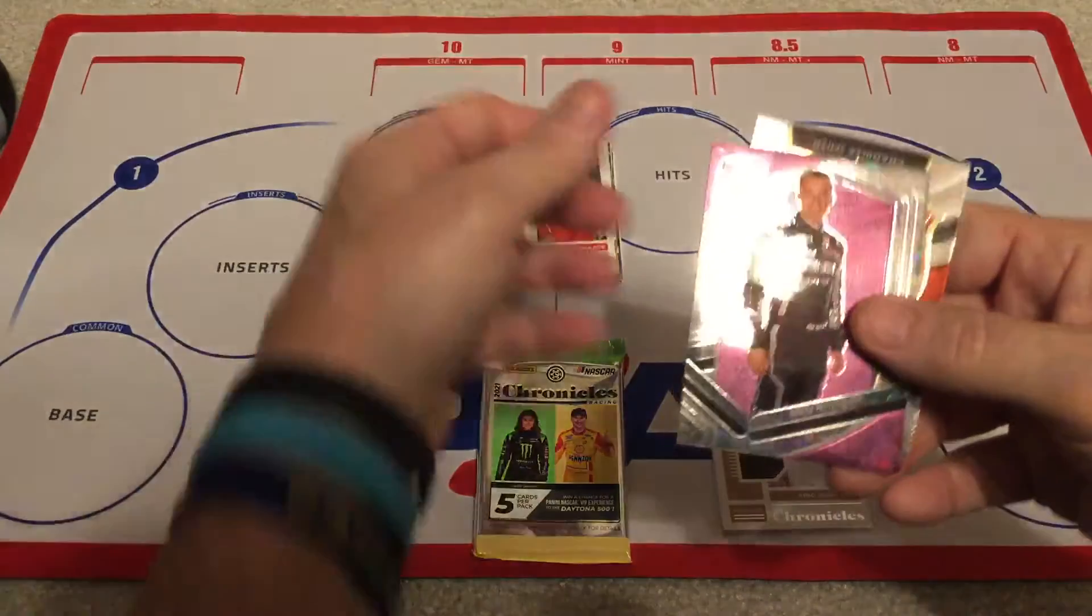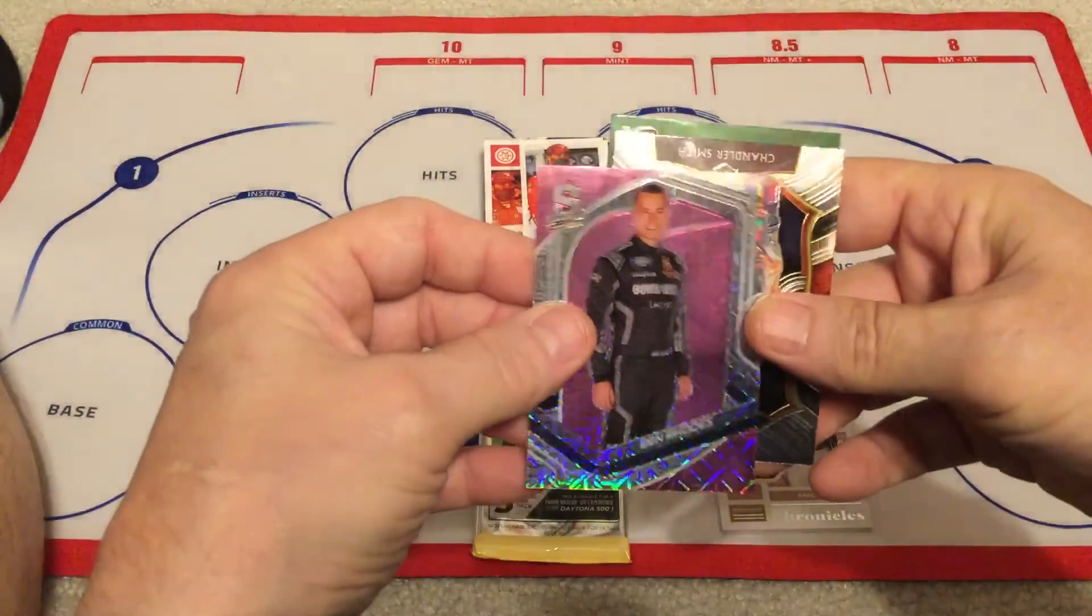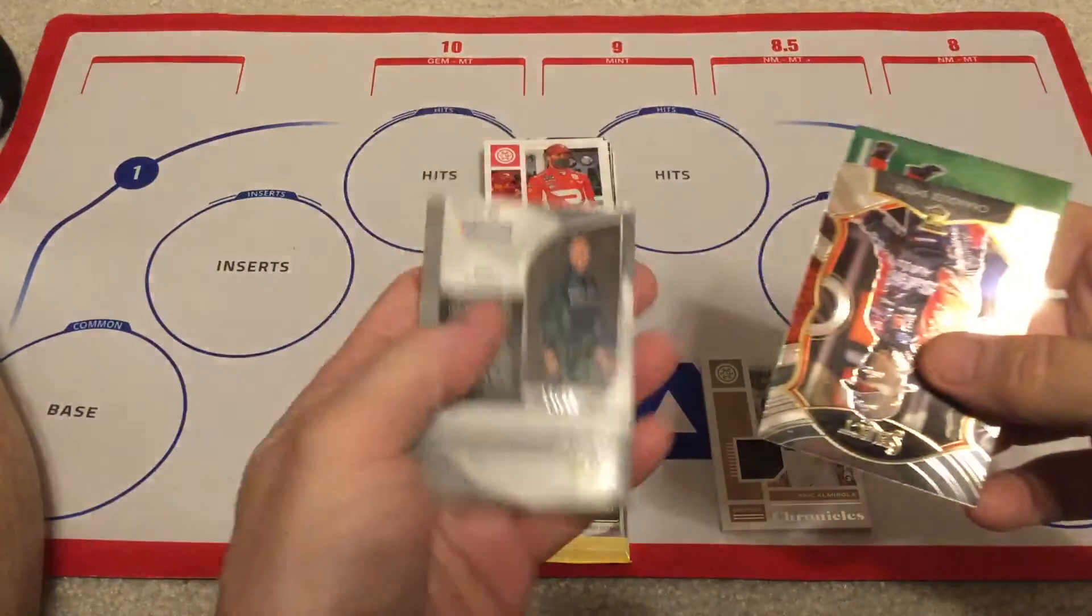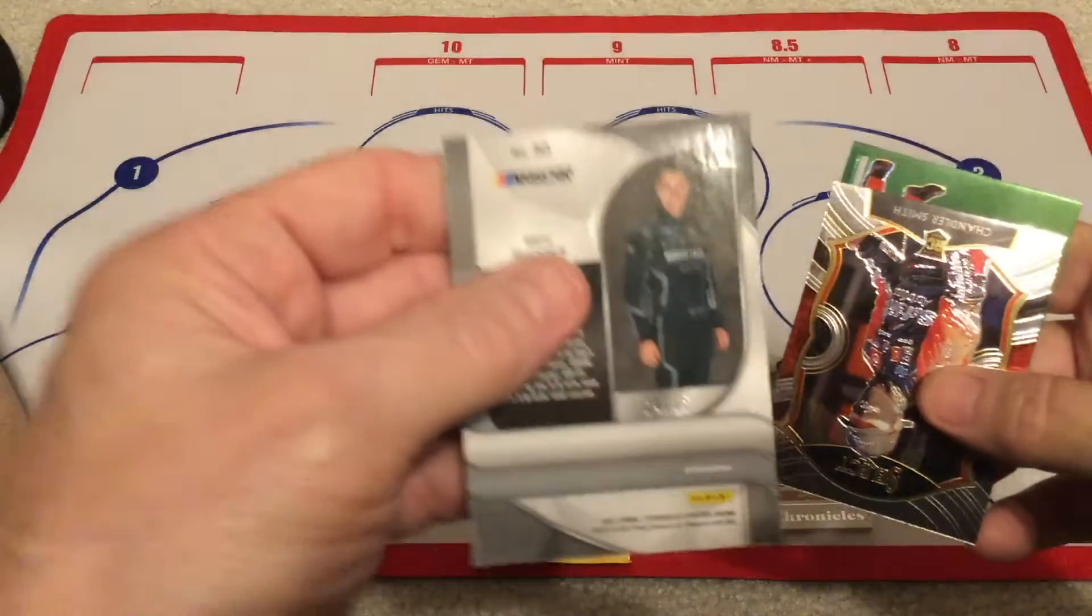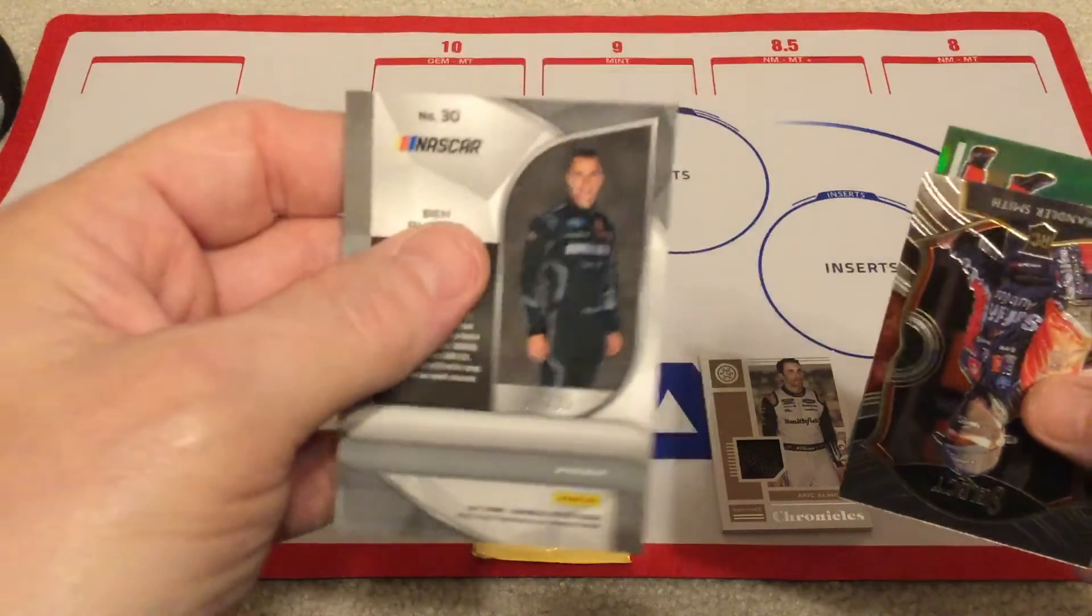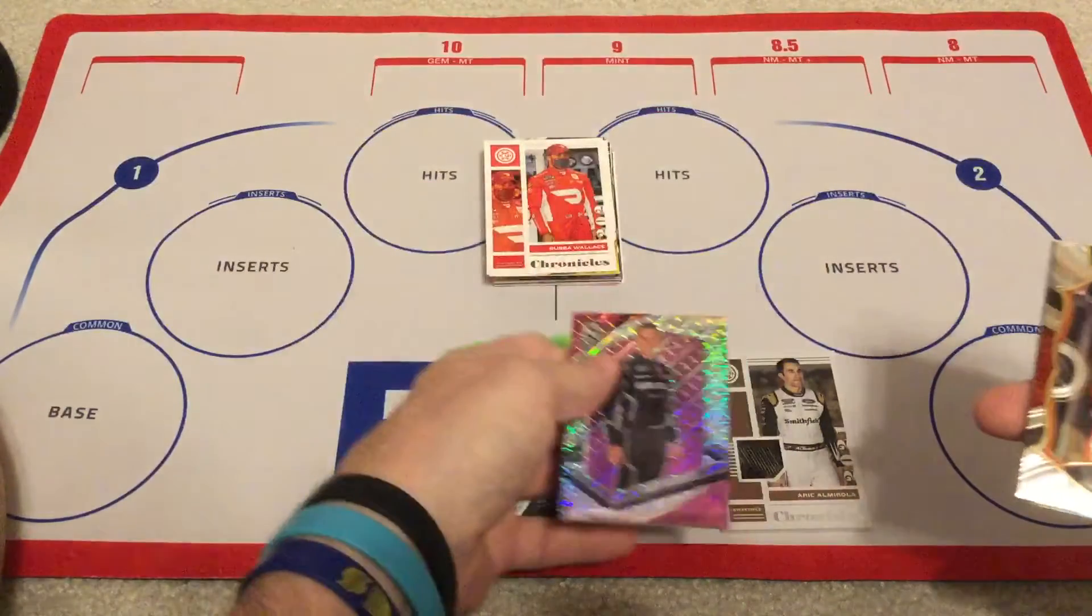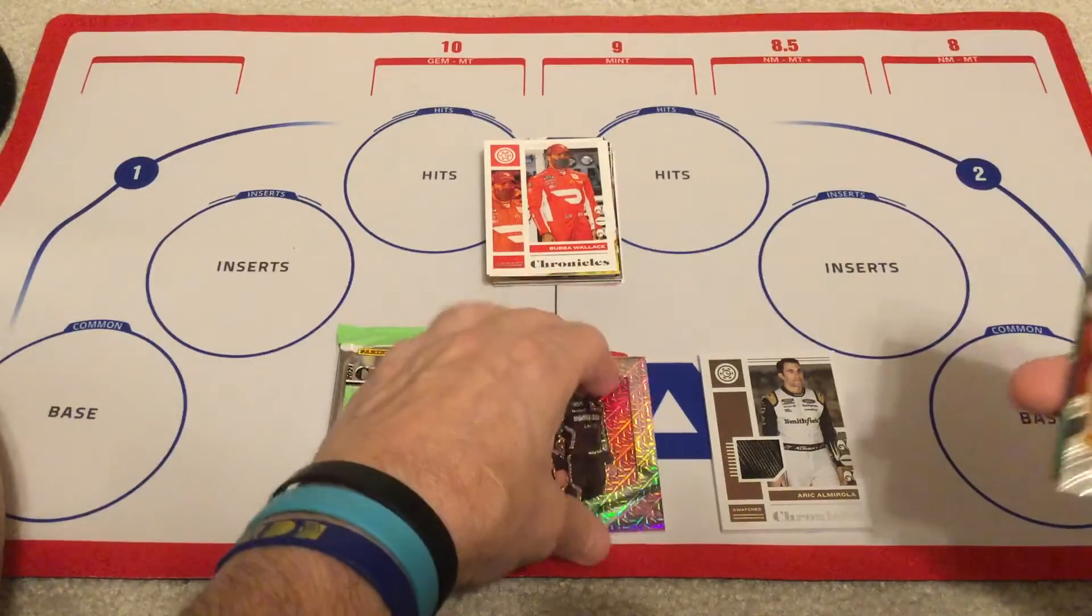That's cool, so that's Ben Rhodes and it is indeed numbered, top 25, it's number 14 of 25. Now that's really cool, me happy, me like that. Set him down there.